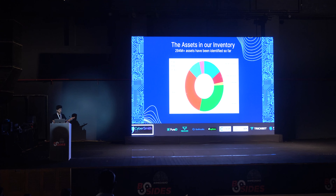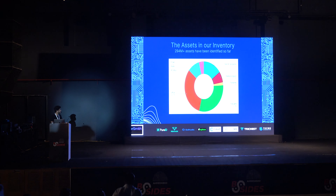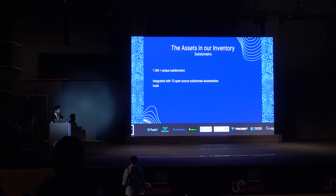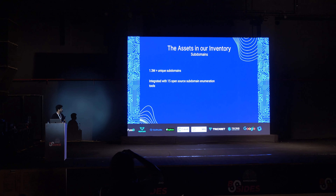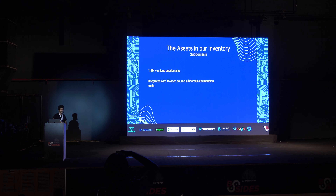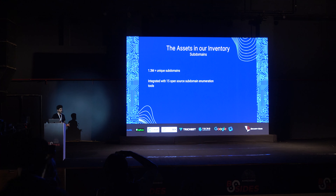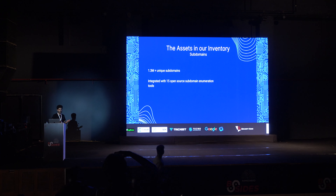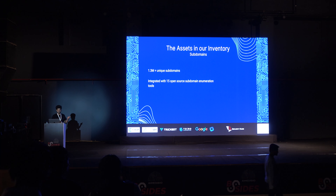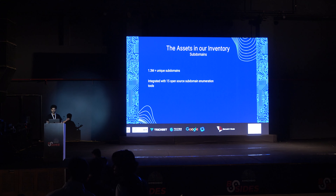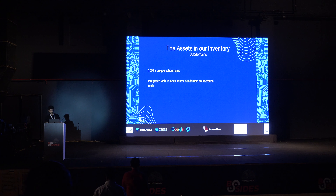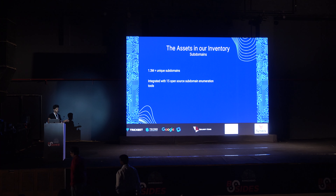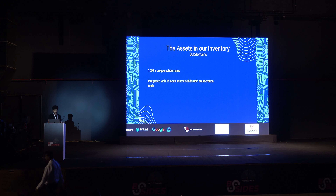Apart from those assets, we have 1.3 million unique subdomains, and it has been integrated with 15-plus open source subdomain enumeration tools. So if you're using SubFinder, Amass, or FindDomain, you're sorted — B-Vigil is already there as a source in these tools. You just need to add your B-Vigil API key in the configuration file and you're good to go.